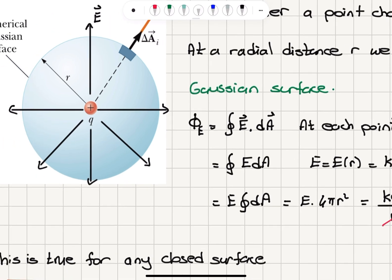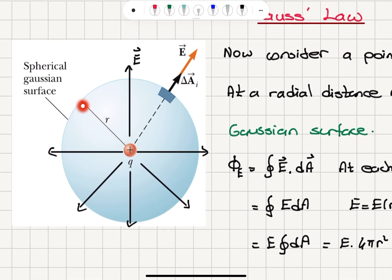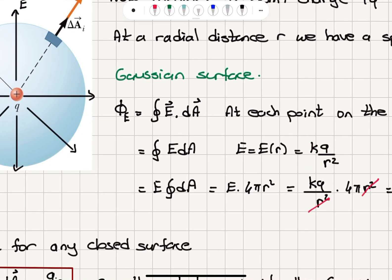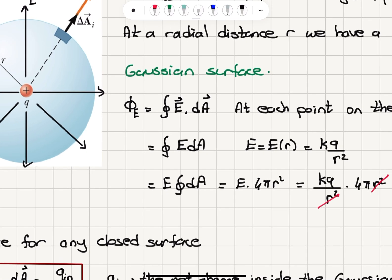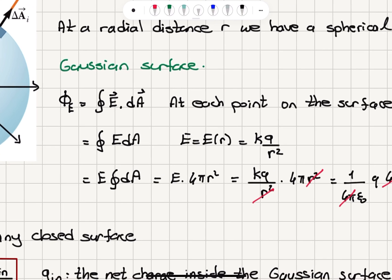You can see that the electric field at radial distance r from this point charge will be a constant on this surface, equal to kq over r². Therefore the electric field comes out of this integral as a constant kq over r², and we have the closed surface integral of dA, which is the surface area of the spherical Gaussian surface, equal to 4πr².